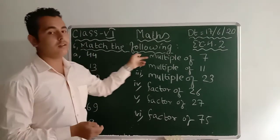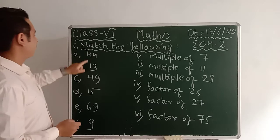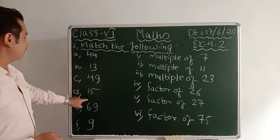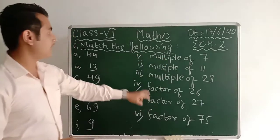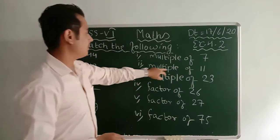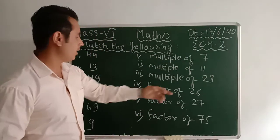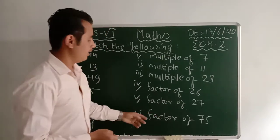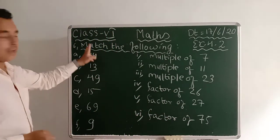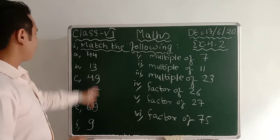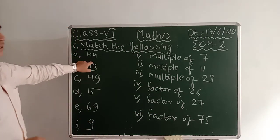Question 6 is 'Match the Following.' Here are a few numbers: 44, 13, 49, 15, 69, and 9. On the right-hand side we have: multiple of 7, multiple of 11, multiple of 23, factor of 26, factor of 27, and factor of 75. We have to match the left column with the right column, so let's start.